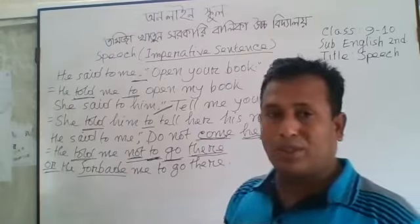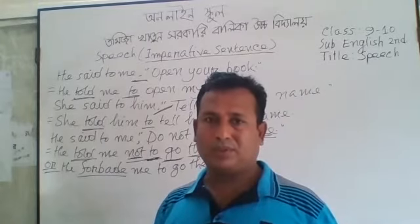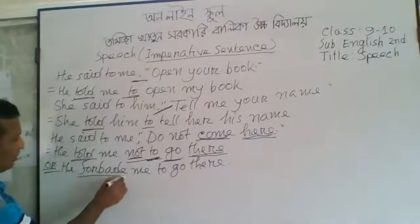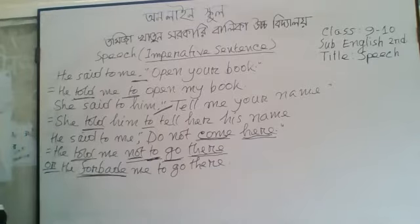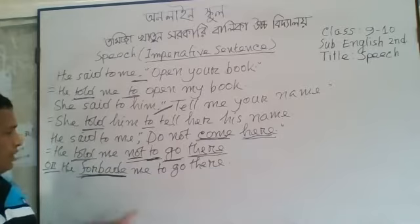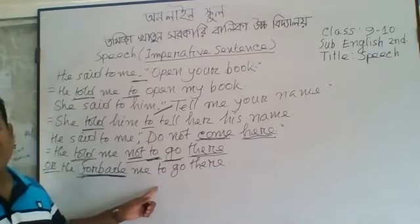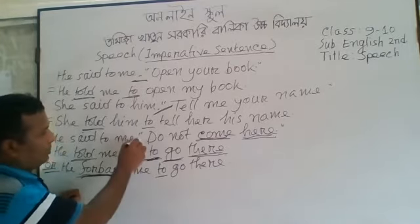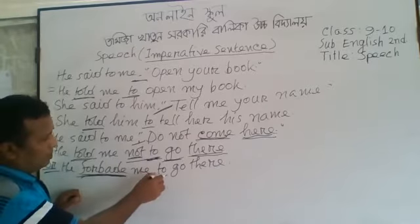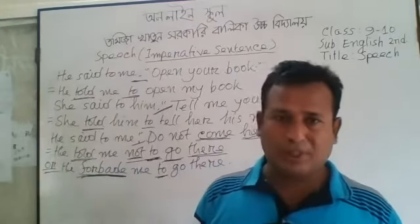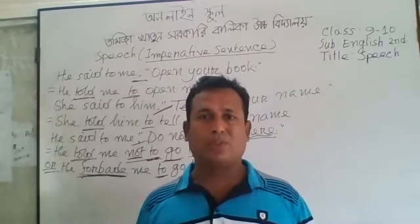There is also an alternative for this. You can also use 'forbid' as the reporting verb. If you use 'forbid,' you need not use 'not' before 'to' — just use 'to' in place of the comma. Of both rules, whichever you prefer, you can use.